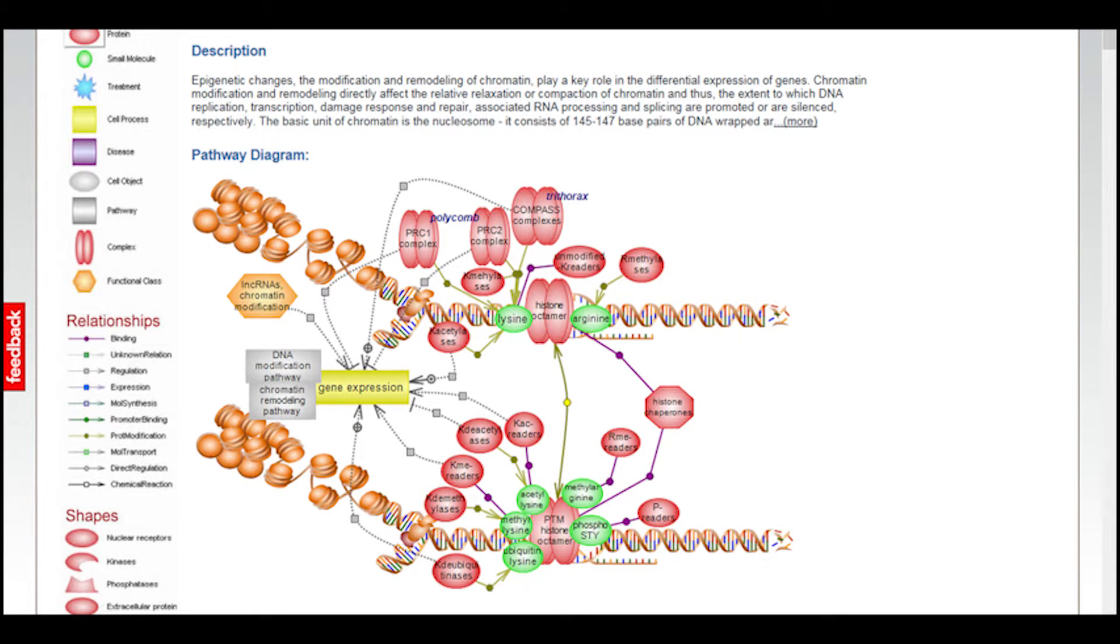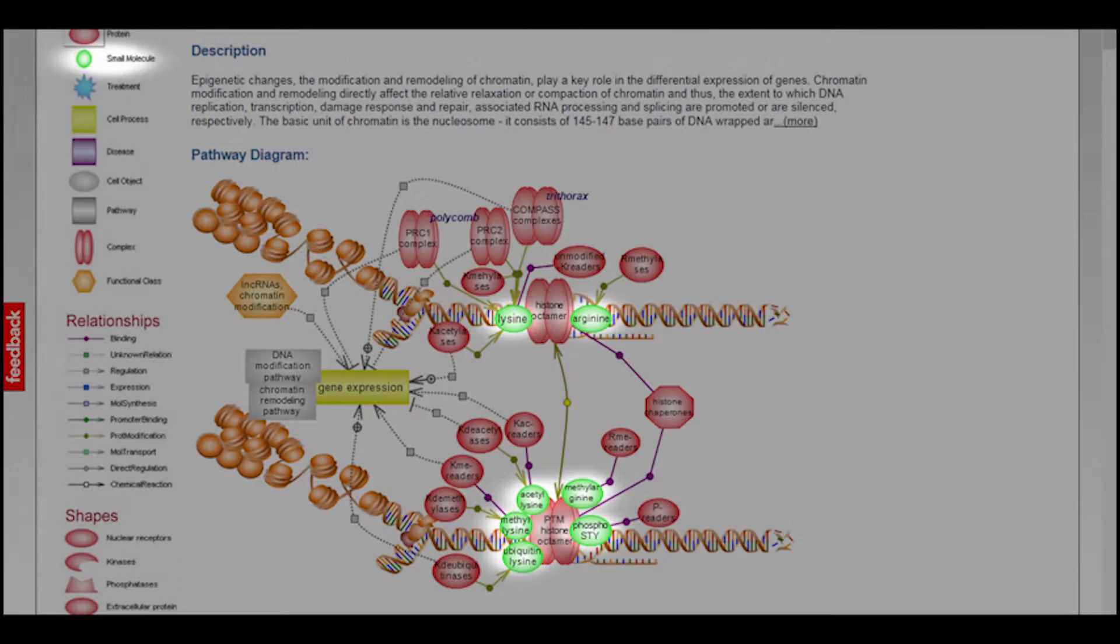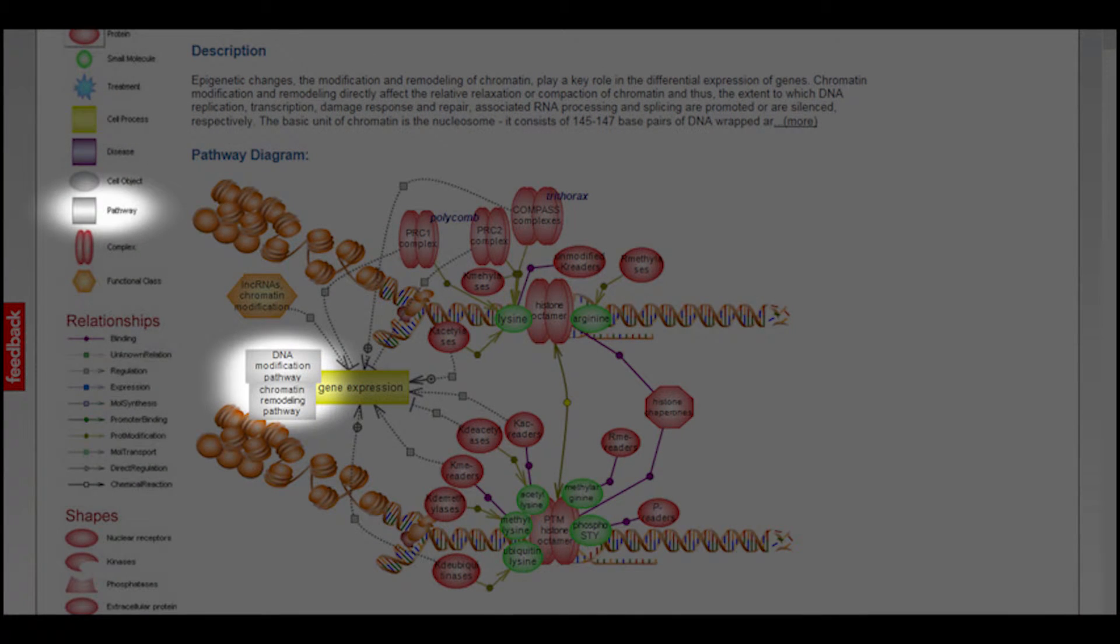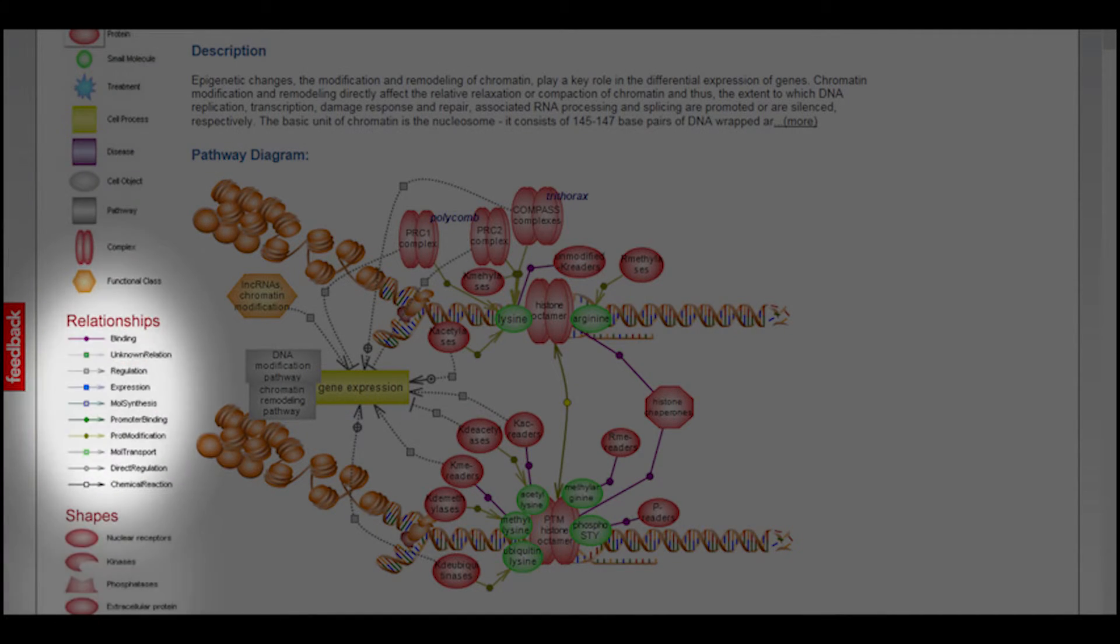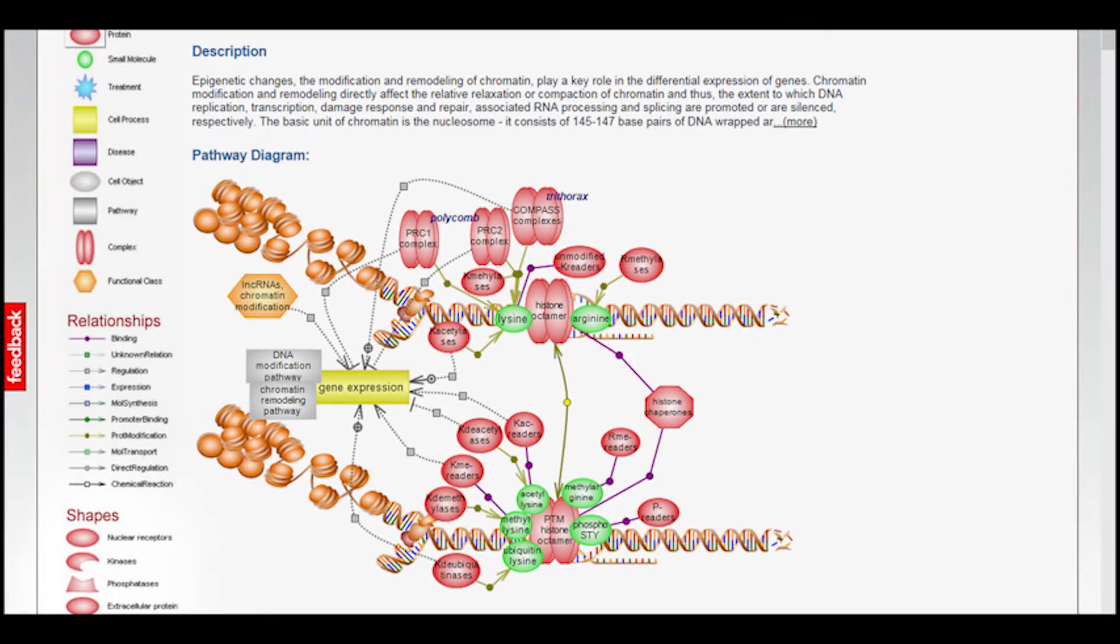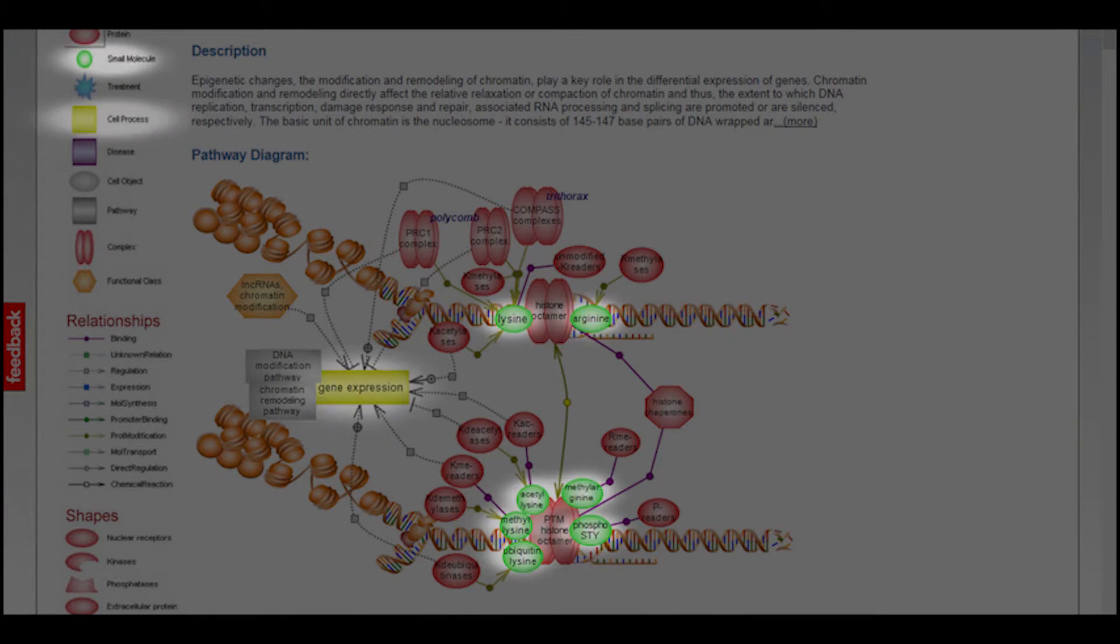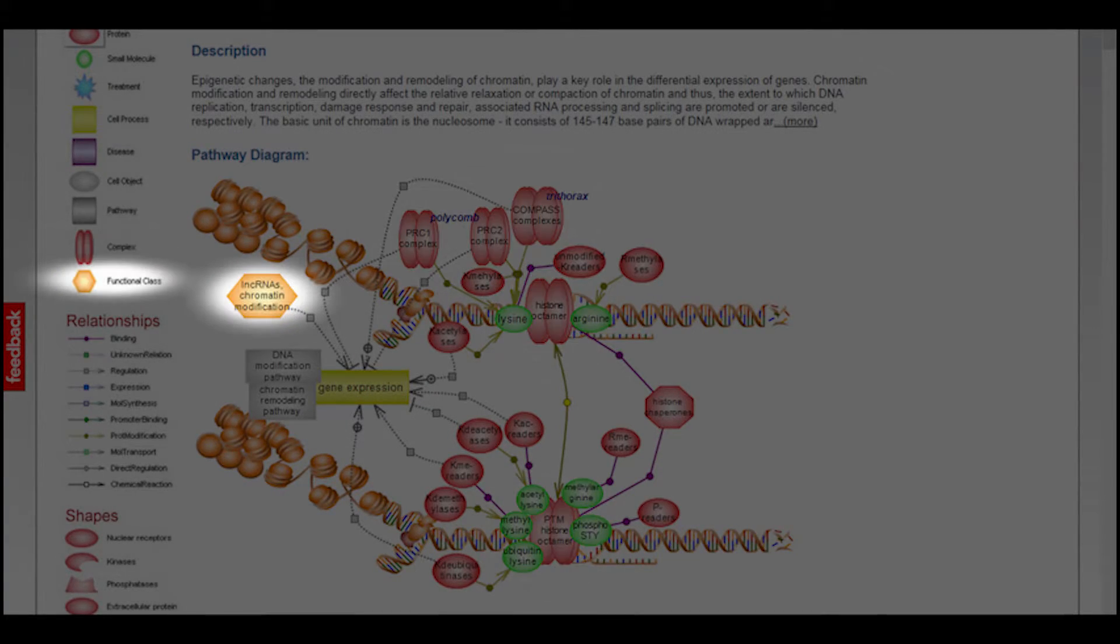The diagram itself consists of a number of different icons. Each icon represents a component of the pathway such as a protein or small molecule, a downstream effect such as gene expression, or a connected pathway. The legend on the left indicates the data types represented by each shape. This particular pathway diagram consists of proteins, small molecules, a cell process, other pathways, complexes, and a functional class.